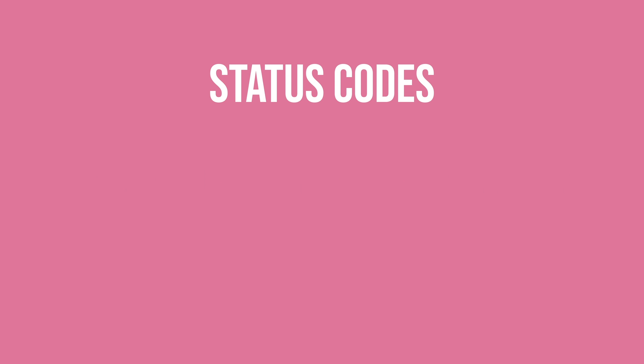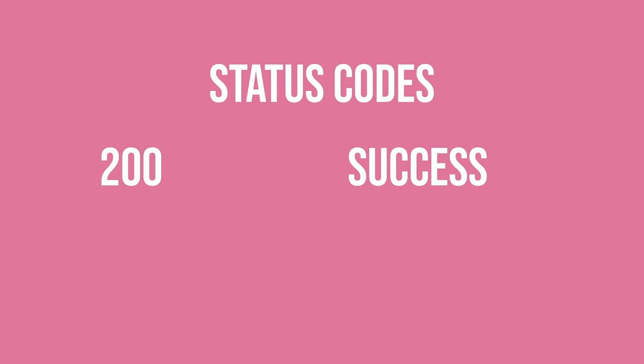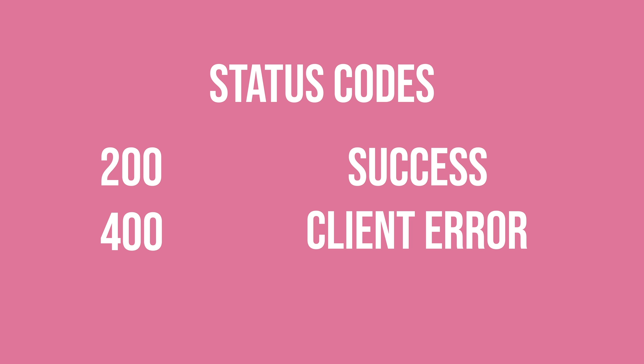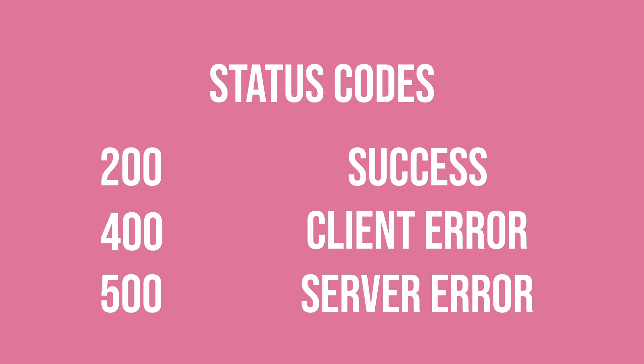This should look familiar because whenever you type a URL into your browser, you're calling a web API. When you get a response from the server, there will be a status code associated with it. If everything went as expected, there will be a status code in the 200 range. You could also receive a 400-range code, meaning something went wrong with the client's request — for example, if the path doesn't exist, you'd receive a 404 error. Status codes in the 500 range mean something went wrong on the server side.